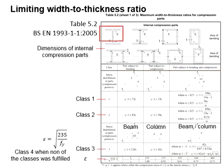If the c per t ratio obtained from the graphical representation here is less than the range of class 1, the web is considered as class 1.